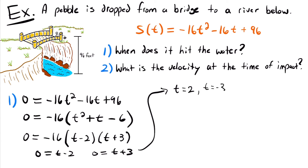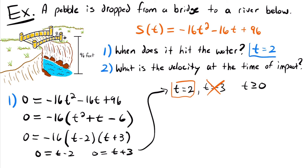Solving for t: we get t equals 2 and t equals negative 3. Since time must be greater than or equal to zero — we can't have negative time — we discard t equals negative 3. Therefore, the pebble hits the water at time equals 2 seconds. That is our first answer.